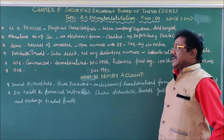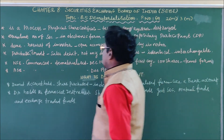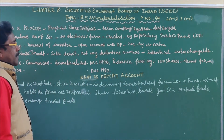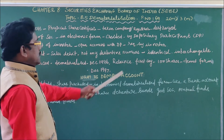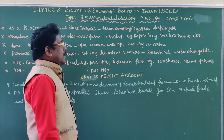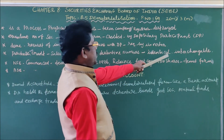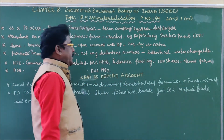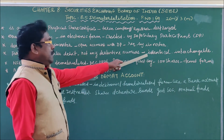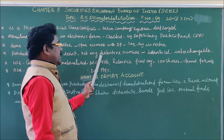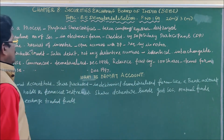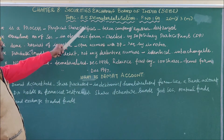All entries for purchases and sales are made in the demat account, but the shares do not have any distinctive numbers, unlike physical certificates. All the shares are identical and similar to each other and are interchangeable. The securities credited or debited in the account are identical and interchangeable. This process is known as dematerialization.